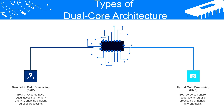The second type is Heterogeneous Multiprocessing (HMP), where each core has a different design or specification. One core may be designed for high performance computing while the other is designed for low power consumption. HMP is commonly used in mobile devices like smartphones and tablets, where the low power core handles basic tasks like email and browsing, while the high performance core handles demanding tasks like gaming or video editing. The two types — SMP and HMP — each have their own advantages and use cases.